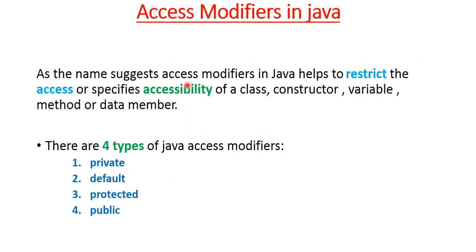As the name suggests, access modifiers in Java help to restrict access or specify the accessibility of a class, constructor, variable, method, or data member. They are mentioned before declaring a class, constructor, variable, or method, specifying what kind of access that particular variable or class has from other classes or from other packages. There are four kinds of Java access modifiers: private, default, protected, and public.